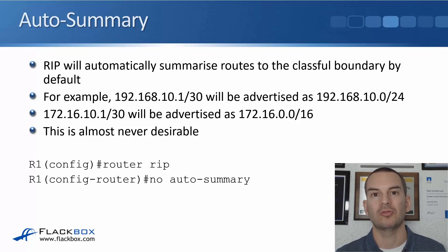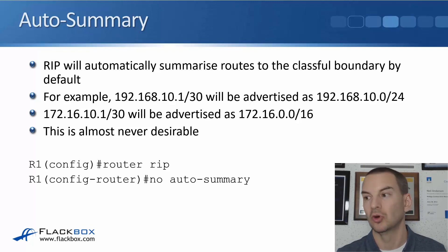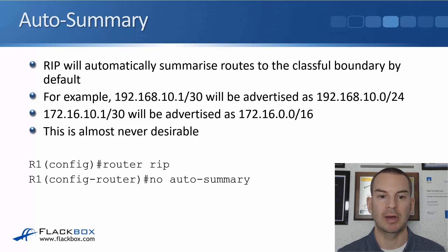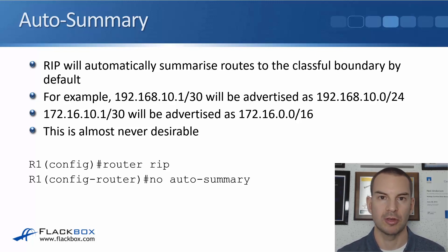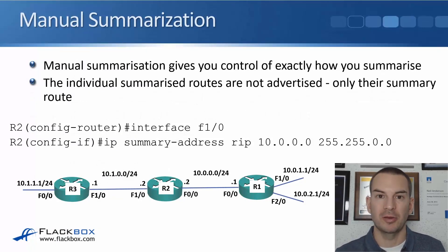If you leave auto-summary turned on, it's liable to cause havoc on your network — possibly blackholing and dropping some of your traffic. So we always disable auto-summary. To do that, the command is 'router rip' followed by 'no auto-summary'.